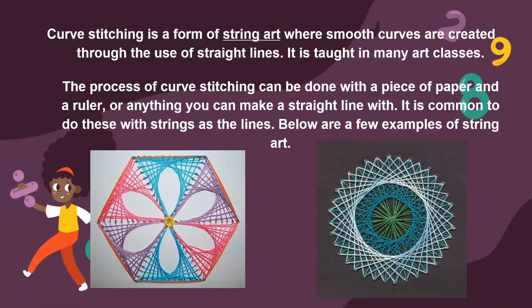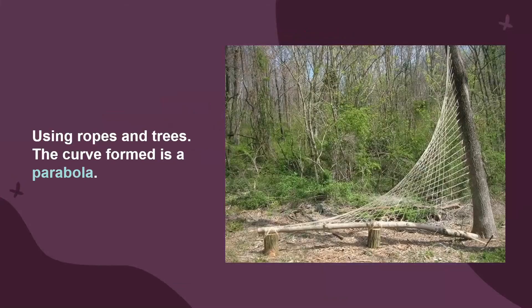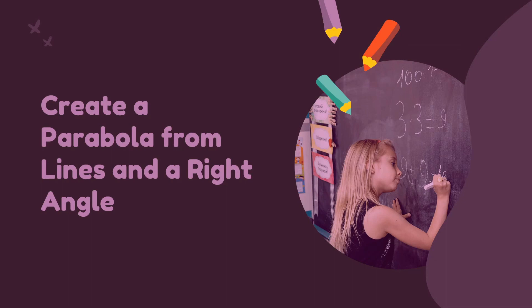Now let's talk about the second topic, curve stitching. Curve stitching is a form of string art where smooth curves are created through the use of straight lines. It is taught in many art classes. The process of curve stitching can be done with a piece of paper and a ruler or anything you can make a straight line with. Maybe it can be a string or yarn. As you can see in this picture, using ropes and trees, the curve formed is a parabola.